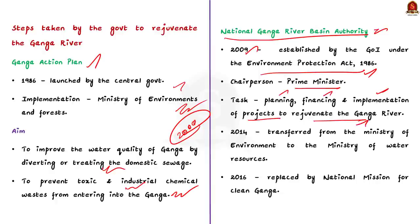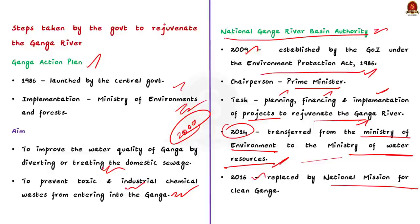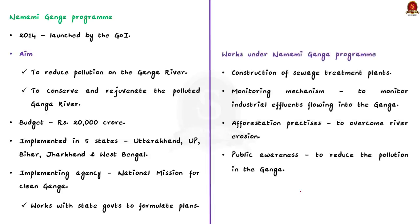This body was responsible for planning, financing, and implementing projects to rejuvenate the Ganga river. Until 2014 it functioned under the Environment Ministry, then was transferred to the Ministry of Water Resources — the Ministry of Jal Shakti. Subsequently in 2016 this body was replaced by the National Mission for Clean Ganga, which now acts as the implementing agency for the Namami Ganga program.